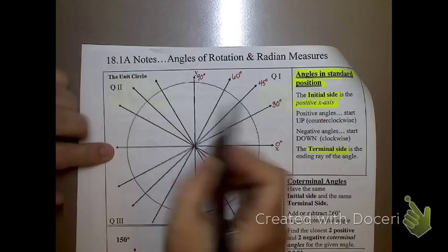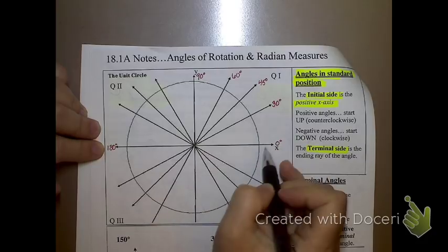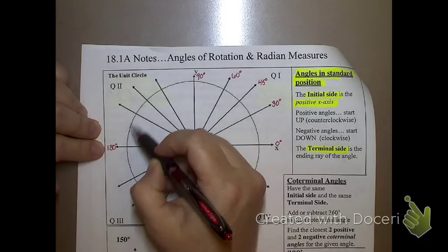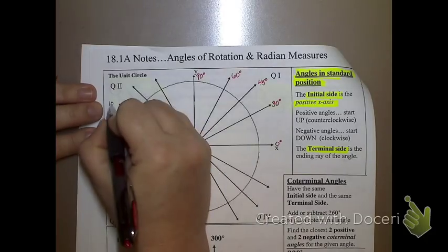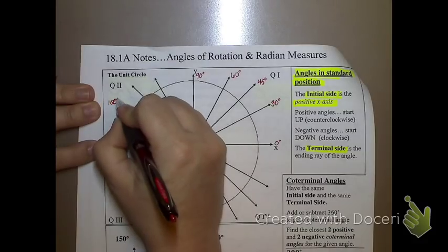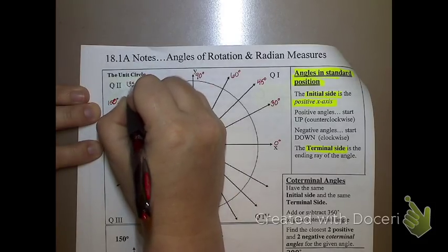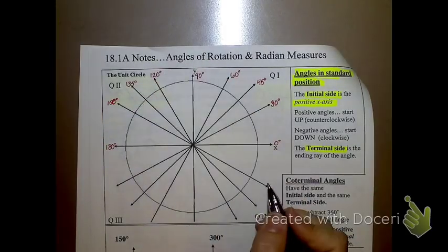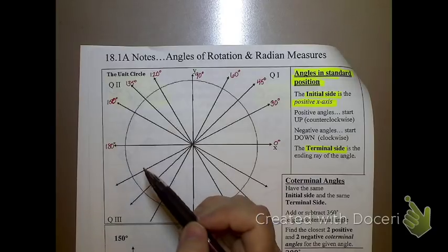If I continue on, all the way over here is 180. I went up 30, 45, and 60 from zero, so I'll do the same thing approaching 180. 30 before 180 is 150. 45 before 180 is 135. 60 before 180 is 120. I could also think of these as 30, 45, and 60 beyond 90, but we prefer to tie things down to the x-axis in our unit circle, not the y-axis.